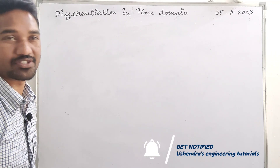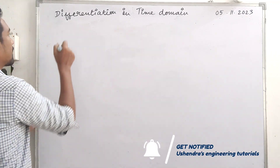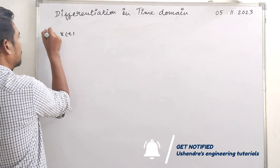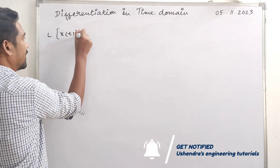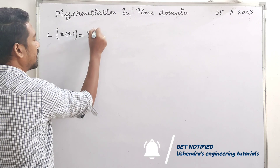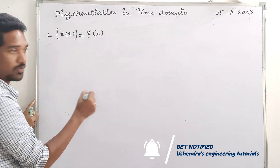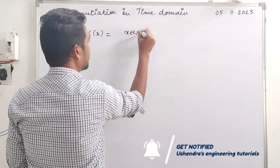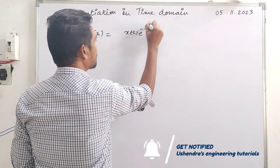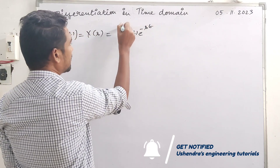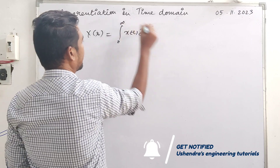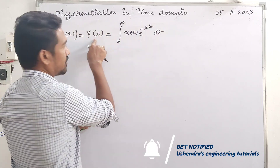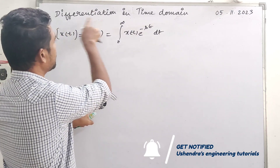Laplace transform differentiation property. The definition: x(t) has Laplace transform represented as x(s). The procedure is: x(t) multiplied by e raised to minus st, integrated from 0 to infinity with dt. We represent the result as x(s). In terms of the differentiation property, there is an important basic requirement.